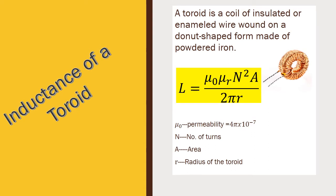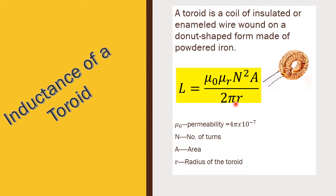Next, inductance of a toroid. When a solenoid is connected in the form of a ring shape, it becomes a toroid. A toroid is a coil of insulated or enameled wire wound on a donut-shaped form made of powdered iron. L is equal to mu_0 mu_R N squared A divided by 2 pi R. Here, mu_0 permeability value is 4 pi into 10 power minus 7, N is the number of turns, A is the area of cross section, and R is the radius of the toroid.